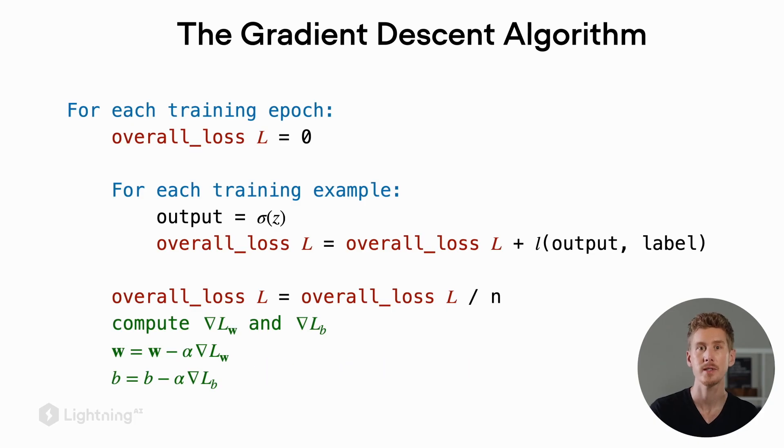For now, just consider what we are doing here is adding a scaled version of this gradient to the weight to update it. And we do the same thing here for the bias unit. So in the next video, we will learn about a variant of this algorithm called stochastic gradient descent.